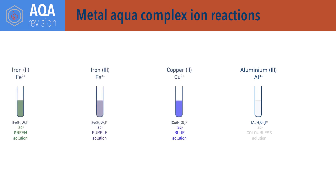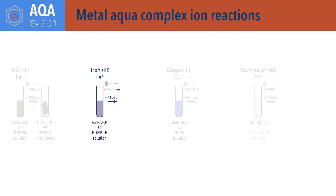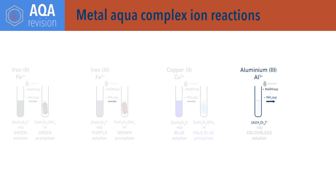If sodium hydroxide or ammonia is added dropwise to any of these solutions, metal hydroxide precipitates form. The iron(II) solution forms iron(II) hydroxide precipitate [Fe(H₂O)₄(OH)₂], which is green in colour — the precipitate may turn slightly brown over time. The iron(III) solution forms [Fe(H₂O)₃(OH)₃], which is brown. The copper(II) solution forms [Cu(H₂O)₄(OH)₂], which is blue. The aluminium(III) solution forms [Al(H₂O)₃(OH)₃], which is white.